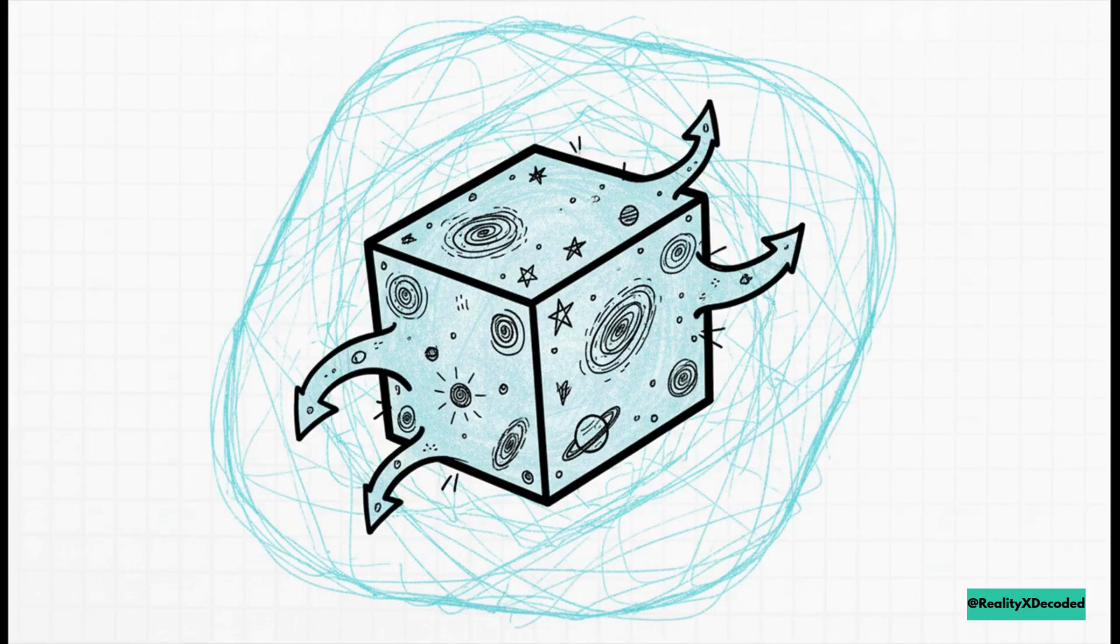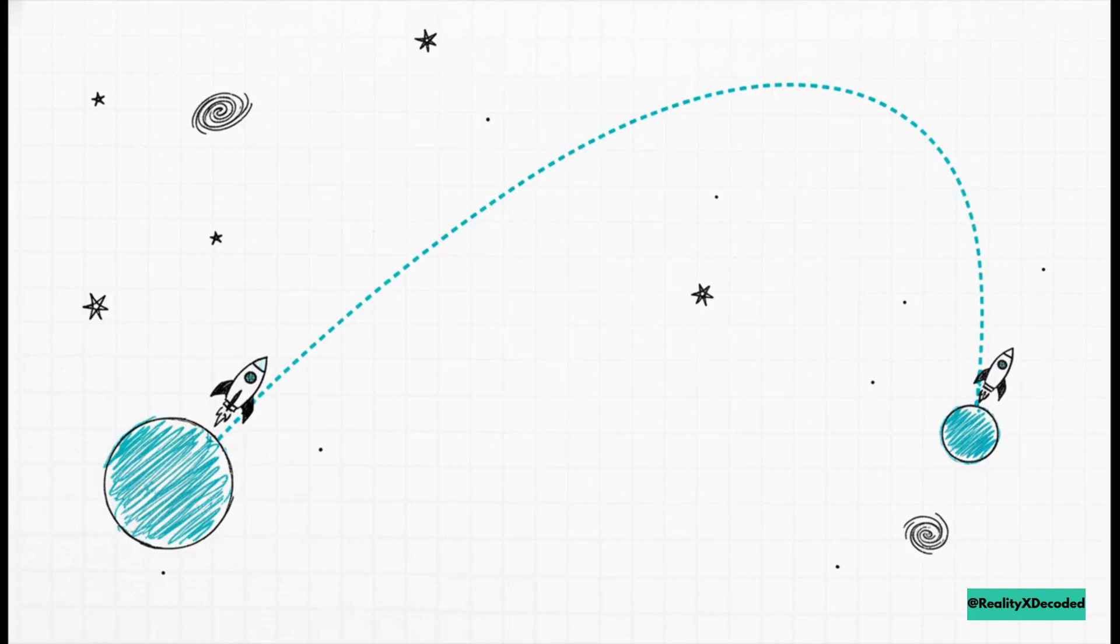Our entire reality could just be the three-dimensional surface of a four-dimensional hypersphere. And the implication of that is just staggering. It would mean that if you got in a spaceship and traveled in a perfectly straight line without ever turning, you would eventually, after an unimaginably long journey, arrive right back here, at your starting point.